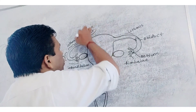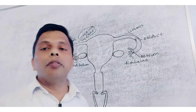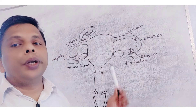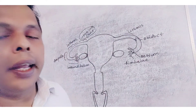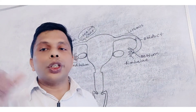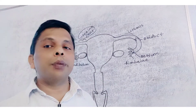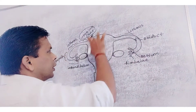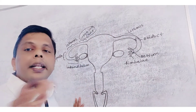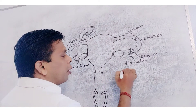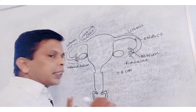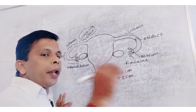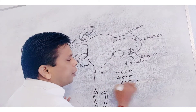Then the uterine part — it helps in attachment of the oviduct with the uterus. It is a connective zone. Next there is a sac-like structure, which is an inverted pear-shaped structure, called as uterus. The uterus is present in the pelvic cavity, and is about 7.6 centimetres in length, 4.5 centimetres in breadth, and 3 centimetres in thickness.